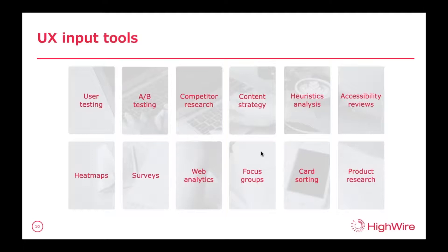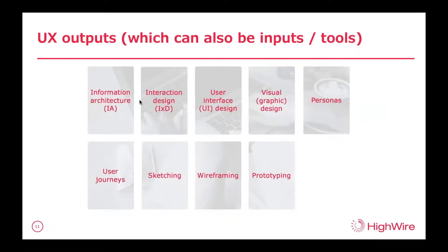So those are some of the tools that we can use. Now let's look at some of the outputs that can result from this research and gathering of information. Some of these outputs can also be used as inputs for further analysis and research, and they are closely interlinked — they don't stand alone. Information architecture, or IA, is the structuring and ordering of information — it may also include flow between pages, navigation, and item ordering, drawing on information perhaps from card sorting. Then we have interaction design, or IxD, which includes how a user interacts with functionality, including behaviours and actions.